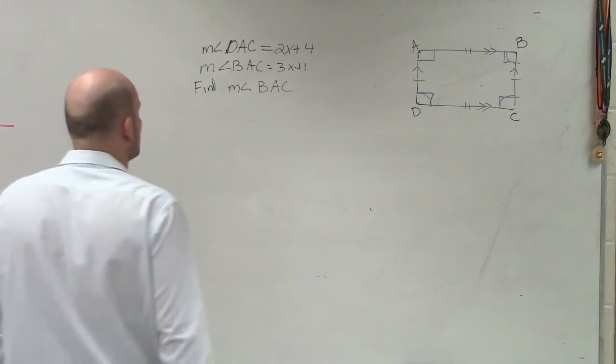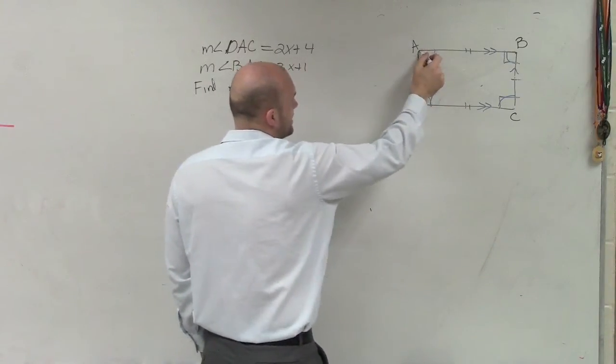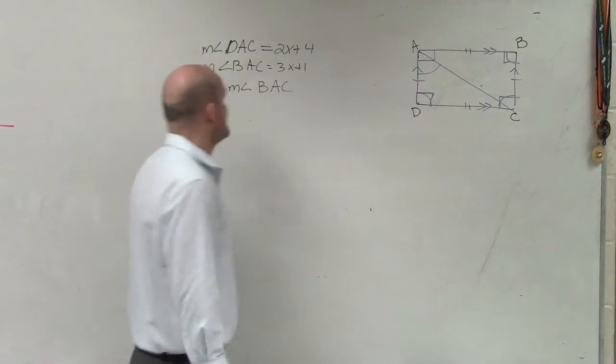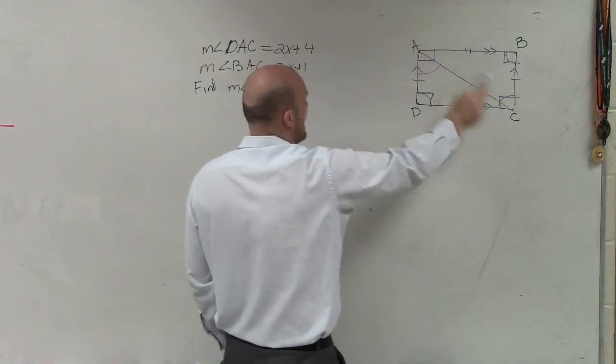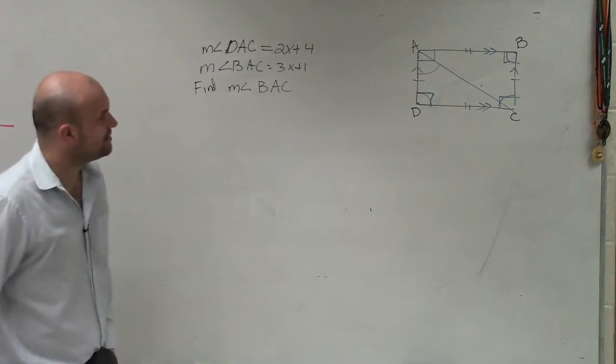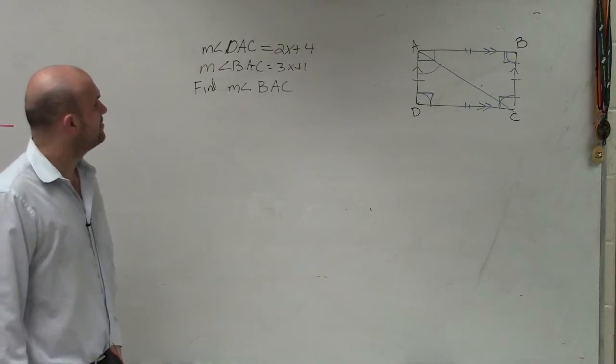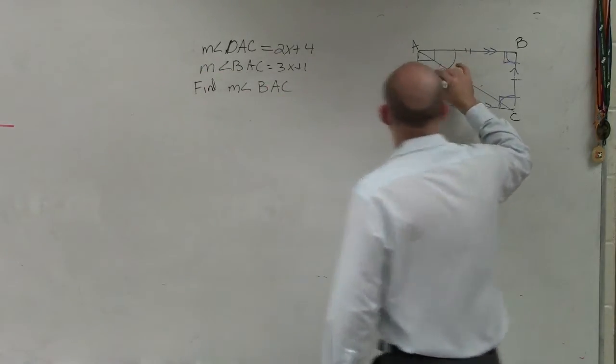So what they have here is they say measure of DAC. D-A-C. So here's our diagonal. So they're saying this angle, measure of DAC, and measure of BAC. BAC is 3x plus 1. Find the measure of BAC.